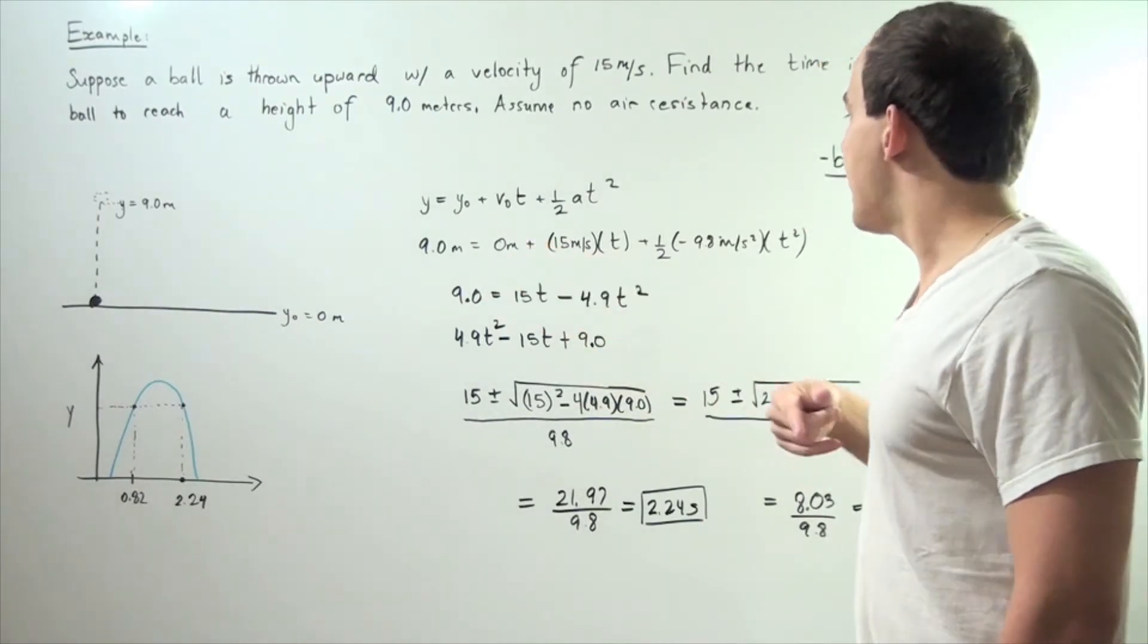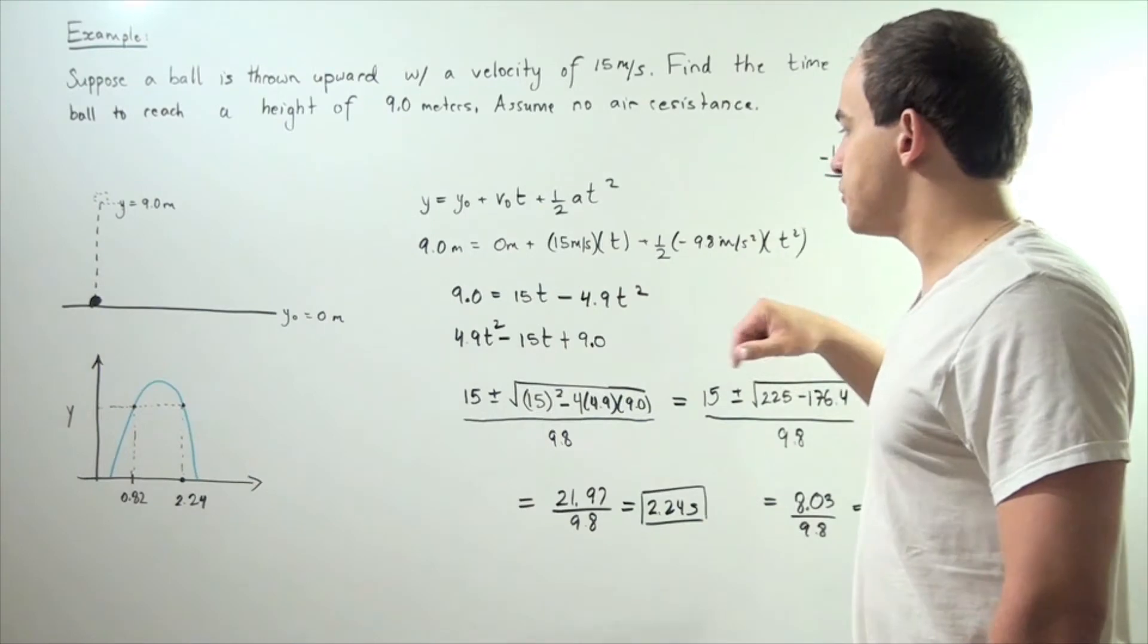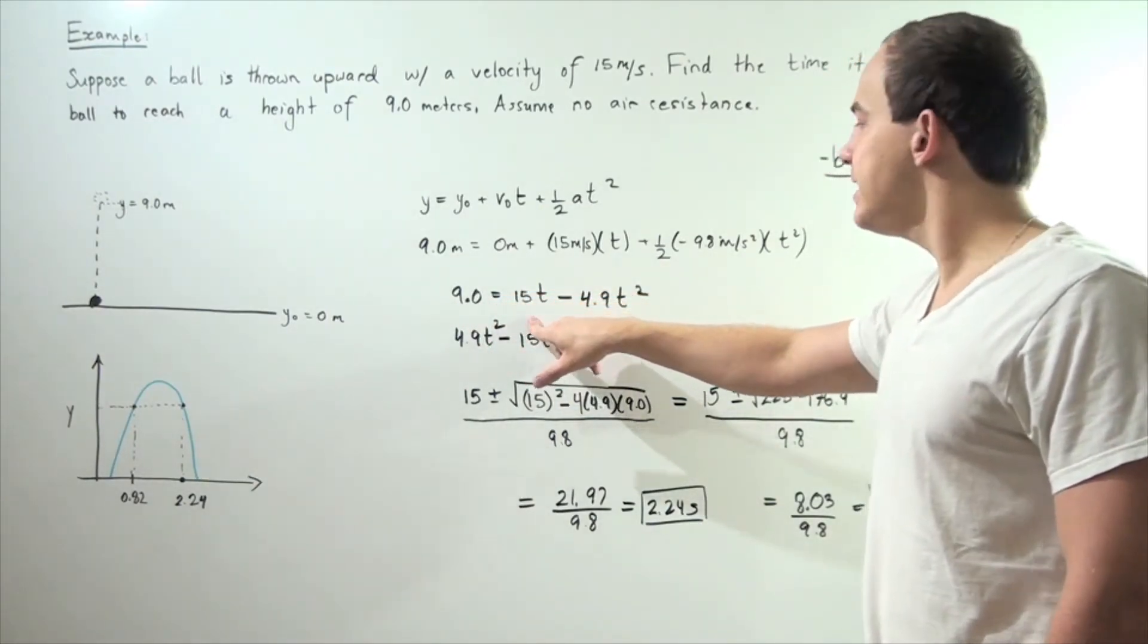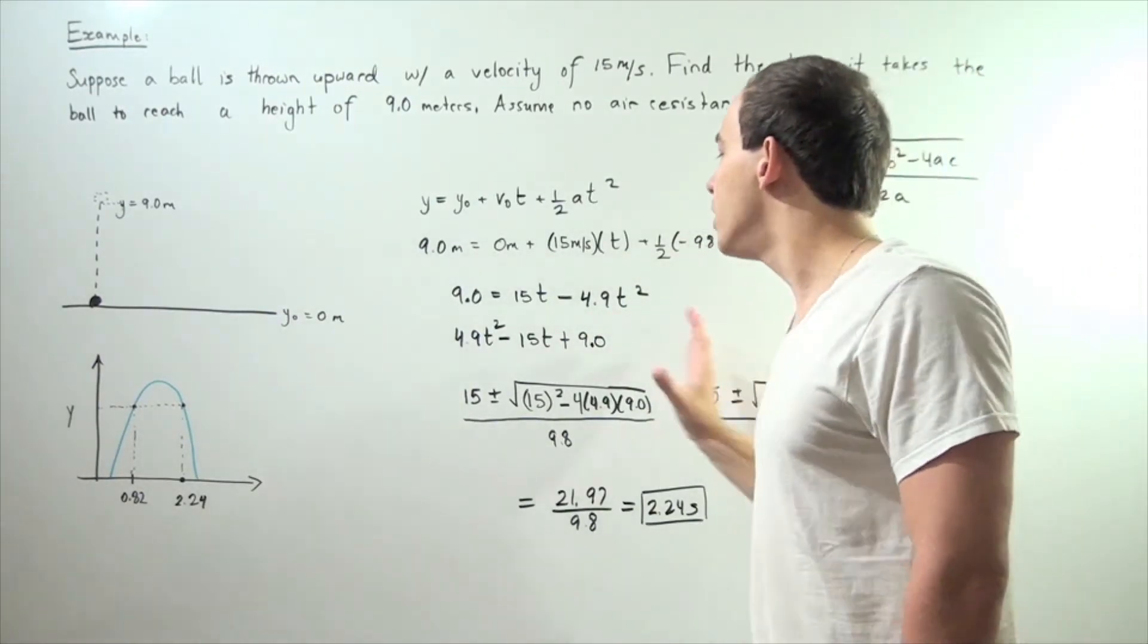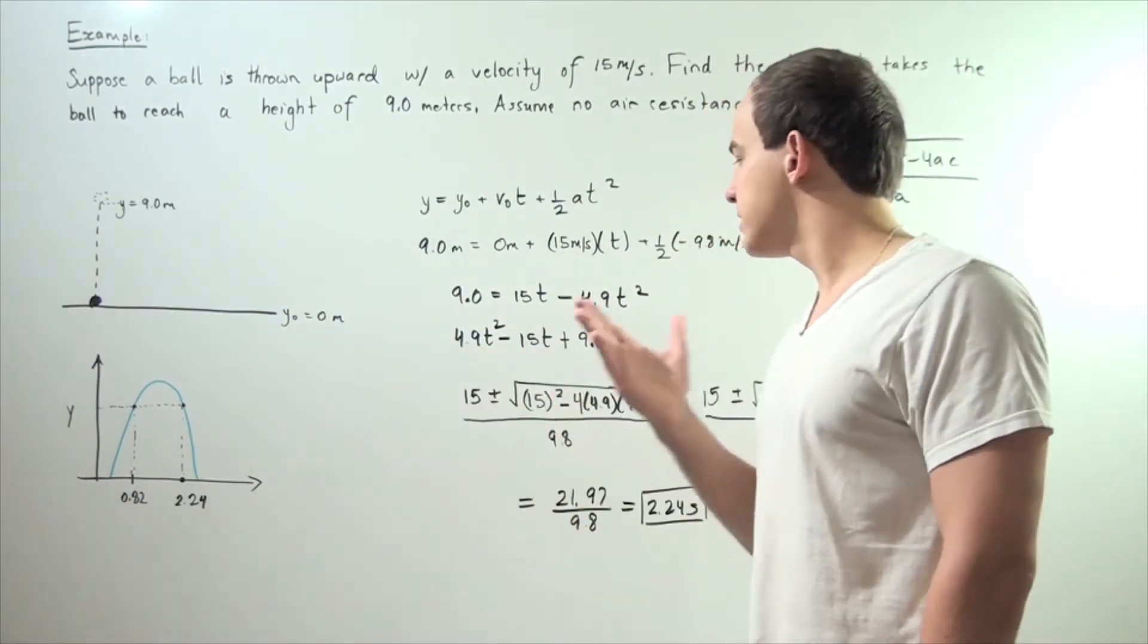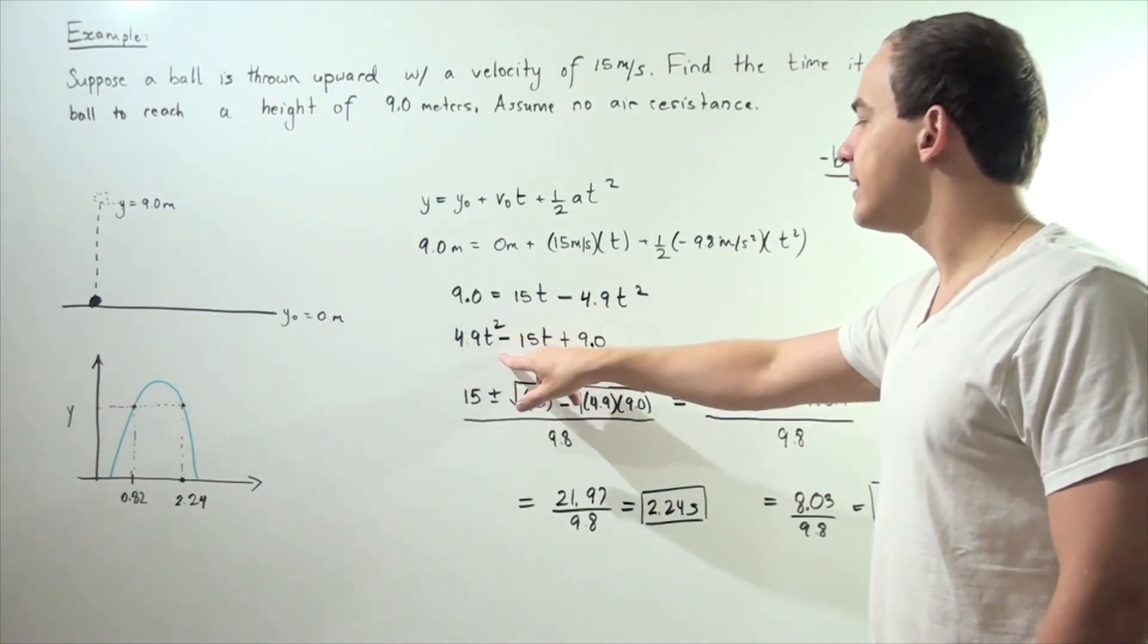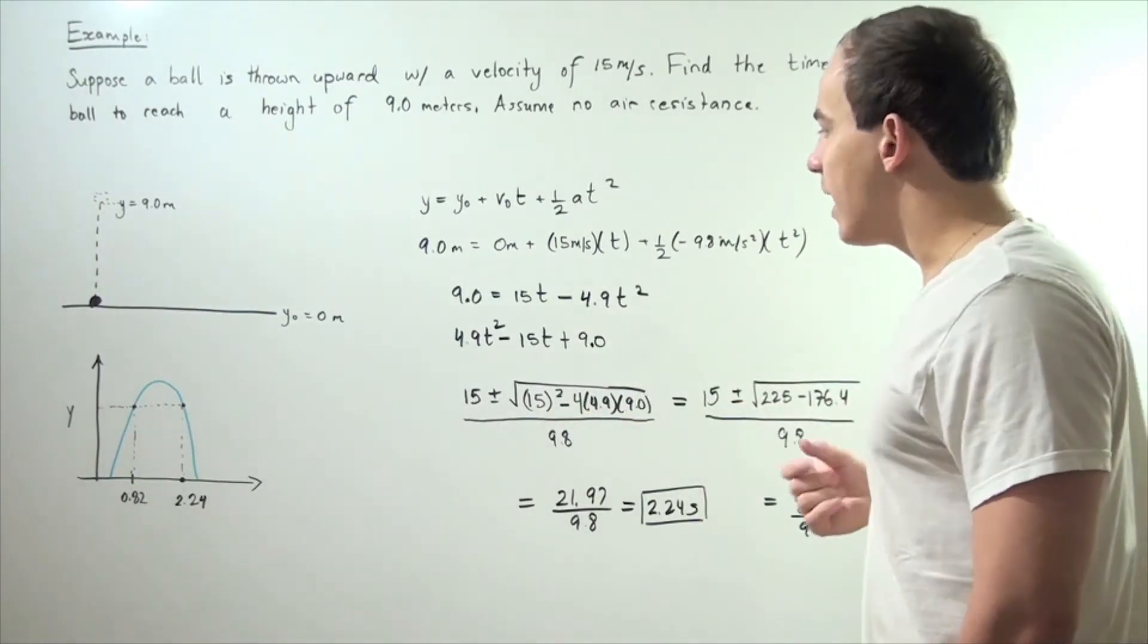Let's get rid of the zero and remove all our units. We have a clear equation here: 9.0 equals 15t minus 4.9t squared. Let's bring everything to one side and set it equal to zero. So we get 4.9t squared minus 15t plus 9.0 equals zero.